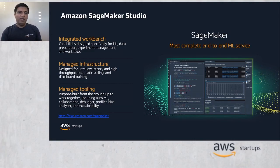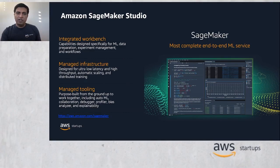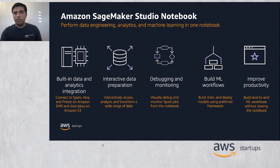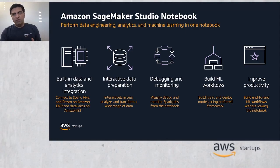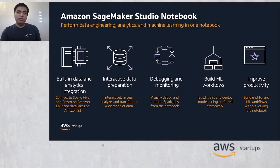All ML development activities including notebooks, experiment management, automatic model creation, debugging, and model and data drift detection can be performed within Amazon SageMaker Studio. SageMaker Studio Notebooks is an extension of the JupyterLab interface. They can launch quickly, and you don't need to set up compute instances or file storage beforehand. A set of instance types, called fast launch types, are designed to launch under two minutes. SageMaker Studio Notebooks provide persistent storage, enabling you to view and share notebooks even if the instances they are running on are shut down. You can also share notebooks with others so they can easily reproduce your results and collaborate while building models and exploring your dataset.